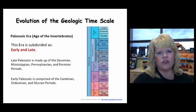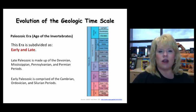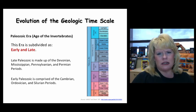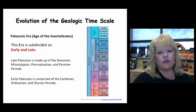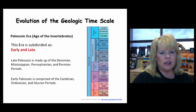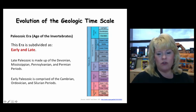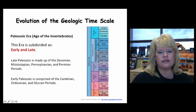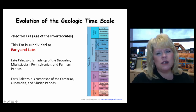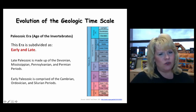The Paleozoic shows a theme of simplistic life forms early on, an explosion of invertebrate life during the Cambrian, and by the end of the Permian, very complex reptiles — but no dinosaurs. In North America we recognize seven periods: Cambrian, Ordovician, Silurian, Devonian, Mississippian, Pennsylvanian, and Permian. In Europe there are only six because they use Carboniferous instead of splitting into Mississippian and Pennsylvanian.